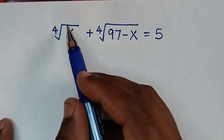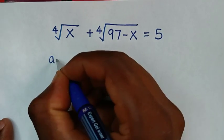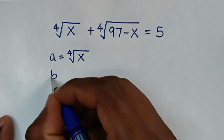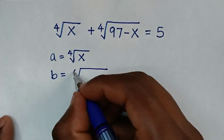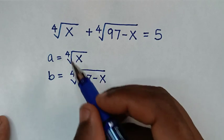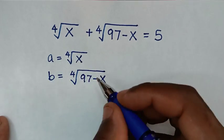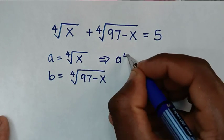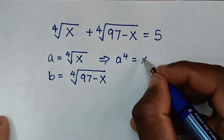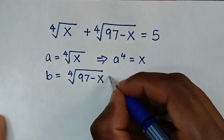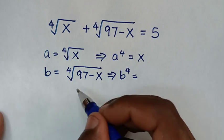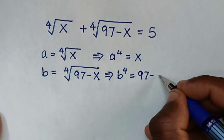In the first step, we start by letting a = ⁴√x and b = ⁴√(97 − x). To remove these 4th roots, we raise both sides to the power of 4, giving a⁴ = x and b⁴ = 97 − x.